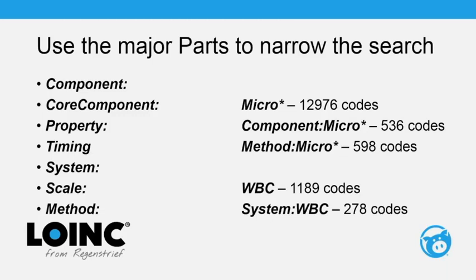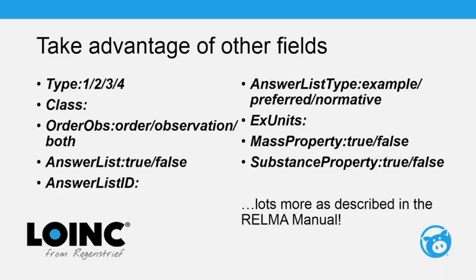Specifying the field makes a significant difference. Searching 'micro*' returns nearly 13,000 codes, but 'component:micro*' returns 536 and 'method:micro*' returns 598. Similarly, searching 'white blood cells' returns 1,189 results, but 'system:white blood cells' returns only 278 codes, and 'component:white blood cell' narrows it even further.